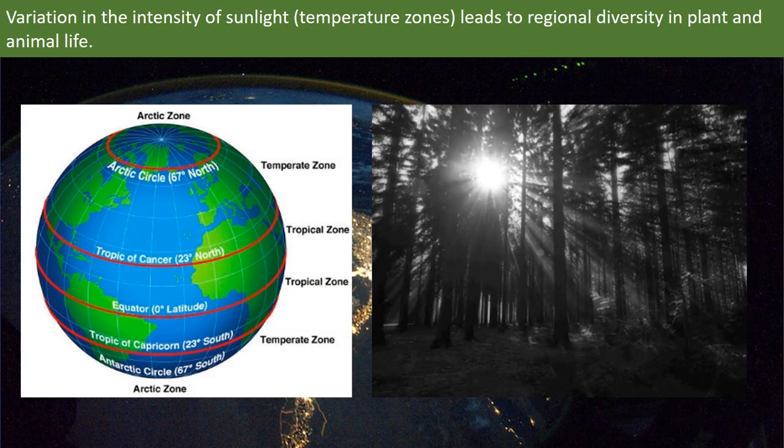Sunlight is necessary for plants to grow. Where there are plants and favorable climate, we find more animals. So, animal life depends on the regions where vegetation is more.